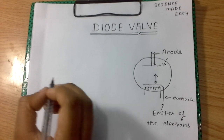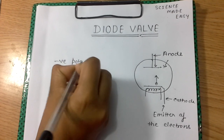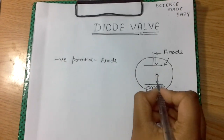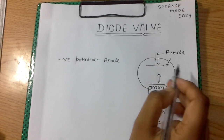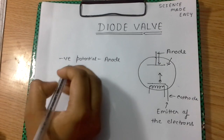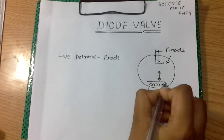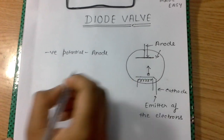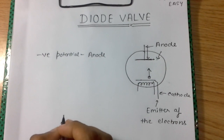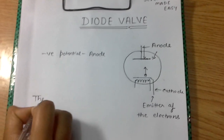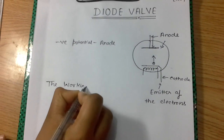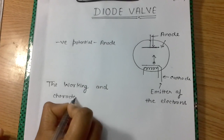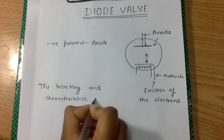Now let us consider the other case: if the anode is not at positive potential but is kept at negative potential, in this case the electrons are repelled by the anode and no current will flow. Also, the current will not flow from the anode to cathode, as the anode doesn't serve here as the emitter of electrons, and the current will not flow.